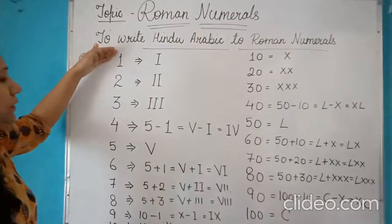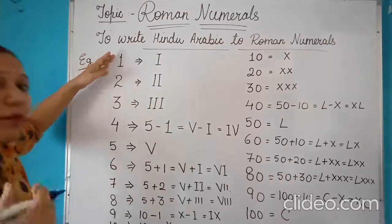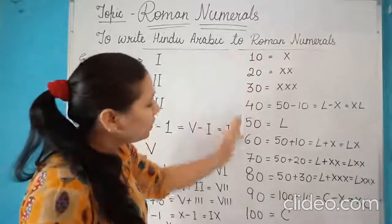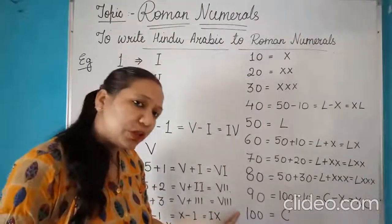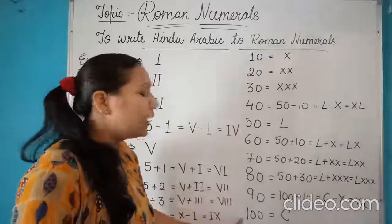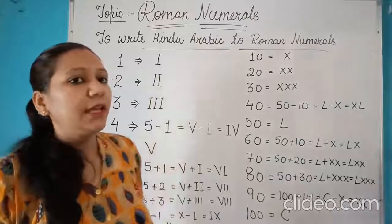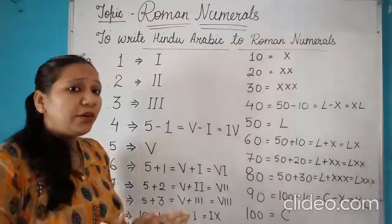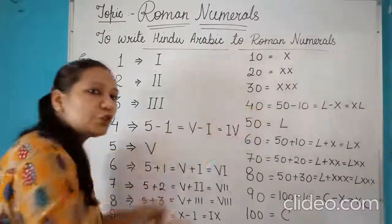So I have discussed how to write the numerical format or the Roman format for 1 to 10. And in the similar manner, we have also studied about the Roman format, how to write the Hindu Arabic to the Roman format from 10 to 100. Using this same formula or using the same theory of addition and subtraction rule, you can represent any Hindu Arabic number to the Romans. Thank you so much.